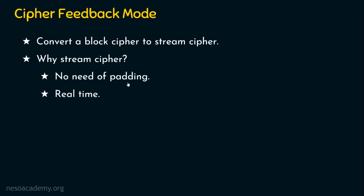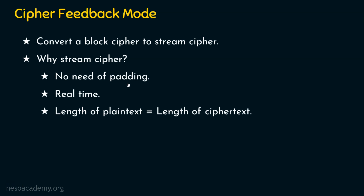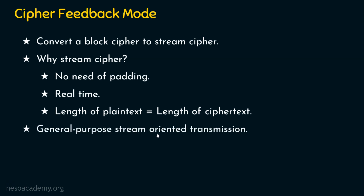Stream ciphers are also used for real-time applications. When real-time traffic needs to be sent, it's not good to wait for the entire block of data to be received. As and when the data is received, it needs to be encrypted and sent. So in such real-time situations, we can go for stream ciphers. The important feature here is that the length of the plaintext will be the length of the ciphertext. The main advantage of CFB mode is for general-purpose stream-oriented transmissions.